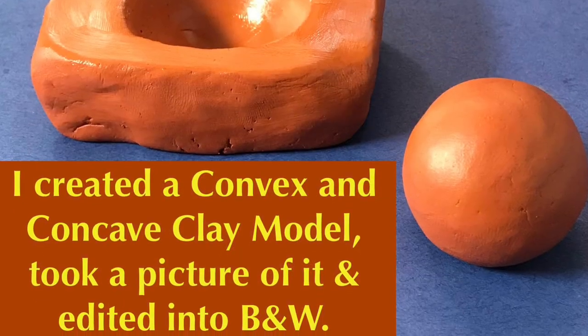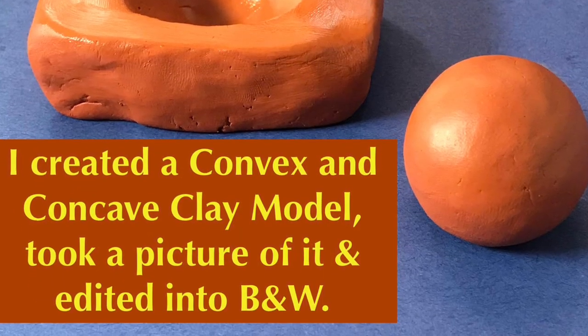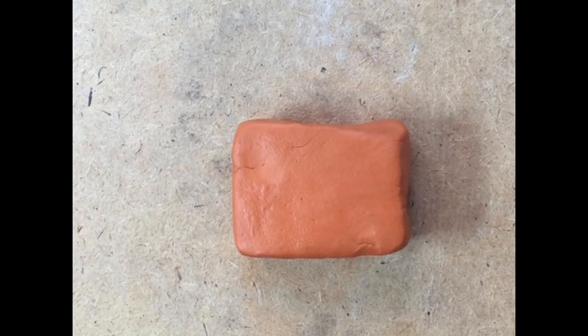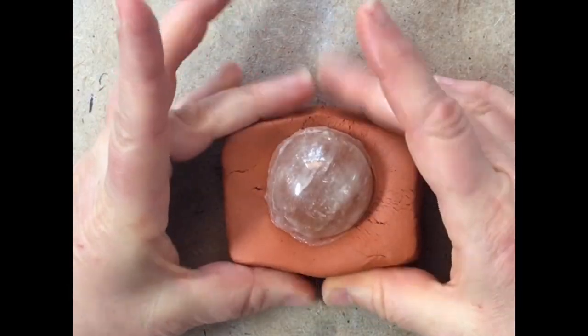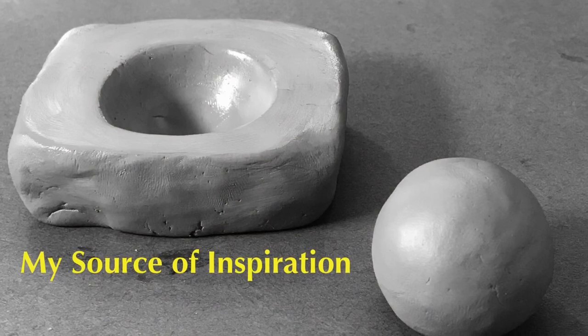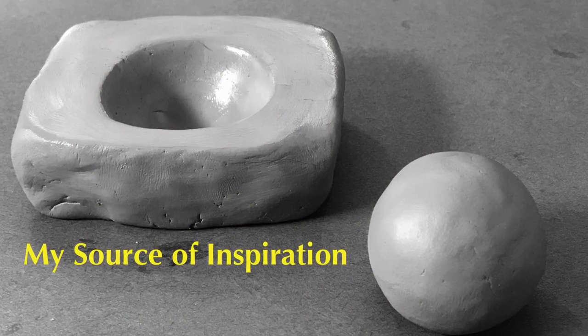So I actually created a clay model, then I took a picture of it and made it into black and white. Here's my clay and I put some Vaseline around it so it would pop off, and then I made it into black and white.